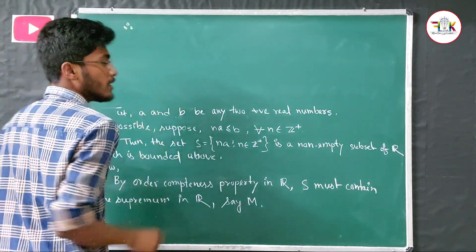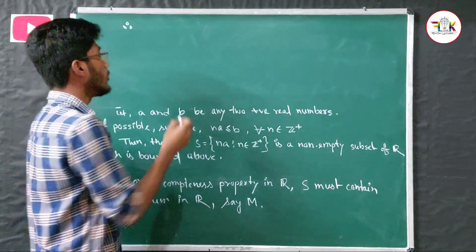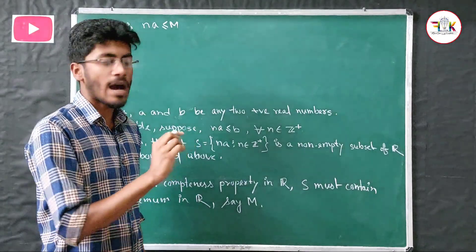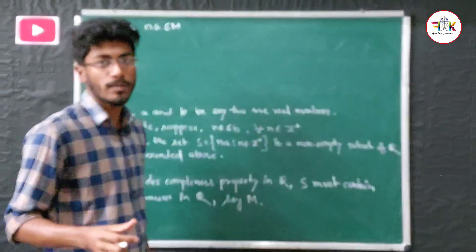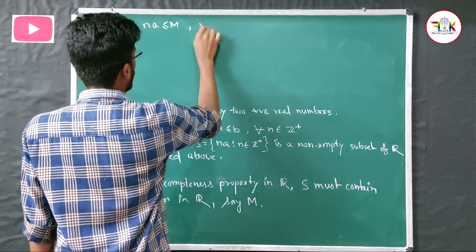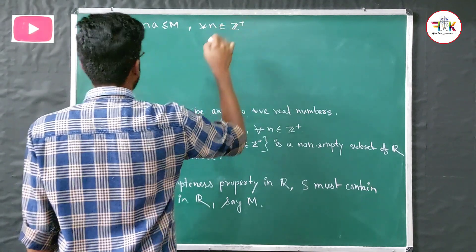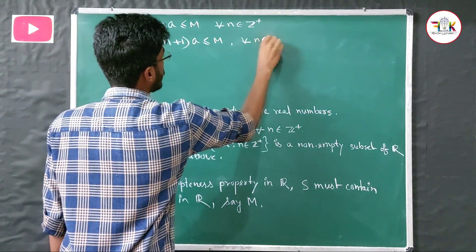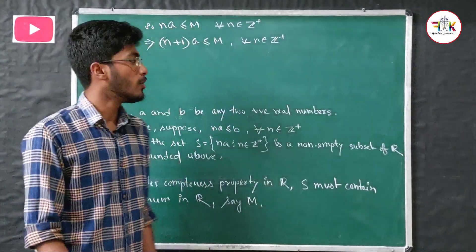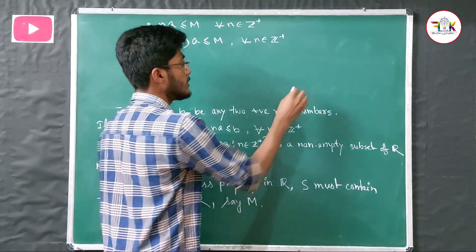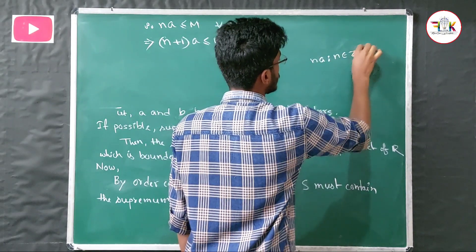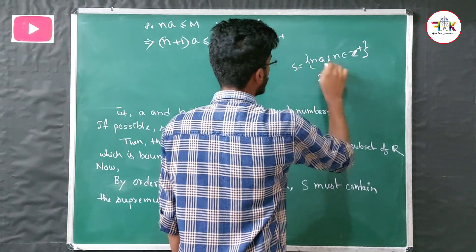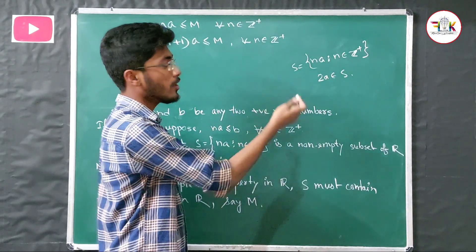Since M is the supremum of S, we have na is less than or equal to M for all n belonging to positive integers. Therefore, (n+1)a is less than or equal to M for all n belonging to Z+.